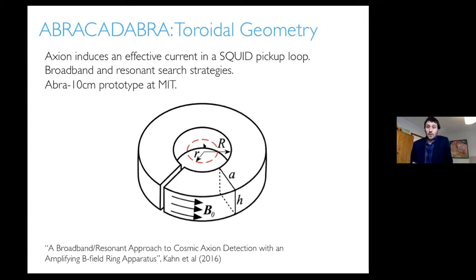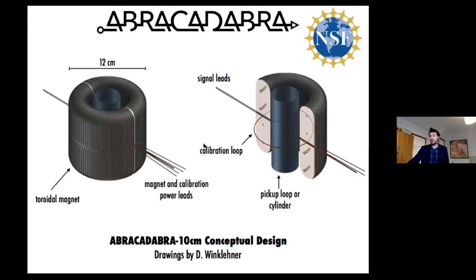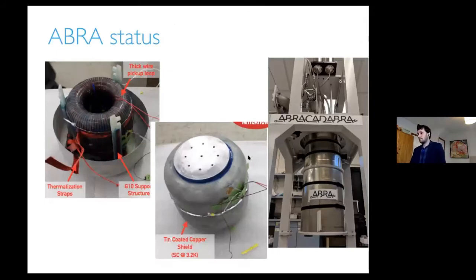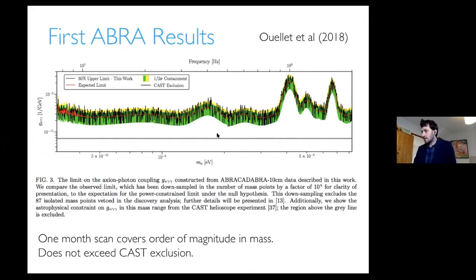This idea works both resonantly and broadband, and it works broadband at very low frequencies. Because it's broadband, you don't necessarily have to scan. The prototype toroid is about 12 centimeters and has been built at MIT and has taken data. The constraints cover a broadband range from 10⁻⁹ to 10⁻¹⁰ electron volts — about an order of magnitude in frequency, from 0.1 to 1 megahertz. But the constraints on the axion-photon coupling don't yet reach outside the exclusions from helioscopes and CAST, since this was only a prototype with one month of total integration time.